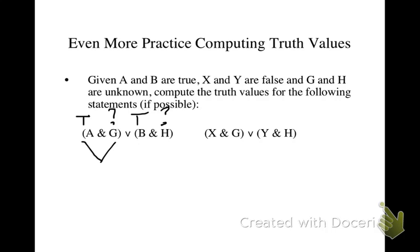Can we calculate the truth value for A and G if we don't know what G is? No, we can't. Because if G is true, then it's true, but if G is false, then it's false.